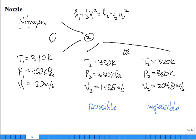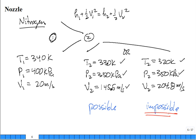Here's another example: nitrogen flowing through a nozzle. Inlet state: T1 = 340 K, P1 = 400 kPa, V1 = 20 m/s. Case one exit: T2 = 330 K, P2 = 350 kPa, V2 = 145.5 m/s. Case two exit: T2 = 320 K, P2 = 350 kPa, V2 = 204.8 m/s. Case two — you can't tell just from looking at it, but a quantitative analysis of the second law reveals it's not possible. Case one is possible.